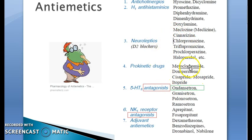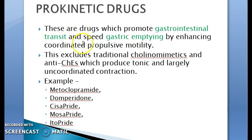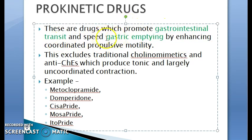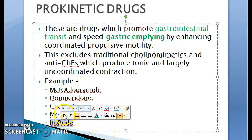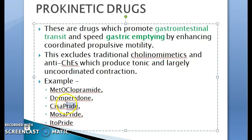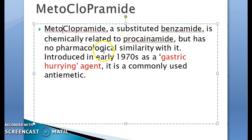In this video we are focusing on metoclopramide and domperidone — primarily metoclopramide. Prokinetic drugs promote gastrointestinal transit and gastric emptying, so the stomach contents get emptied. Examples include metoclopramide, domperidone, cisapride, mosapride, and etopride. The 'prides' are all prokinetic.